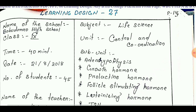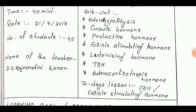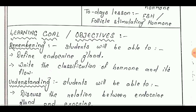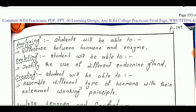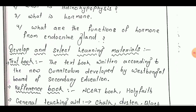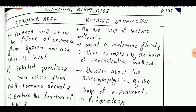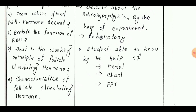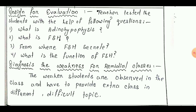Learning design number 26 is taken from Class 9. Today's lesson is 'FSH, that is Follicle Stimulating Hormone.' The learning goals are: remembering, understanding, applying, analyzing, evaluating, and creating. Next point is analyze learner and context, then develop and select learning materials. Learning strategy is divided into two parts: learning area and related strategies. Next is design for evaluation, and the last point is diagnosing the weakness for remedial class.